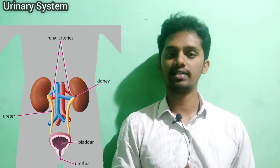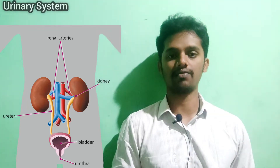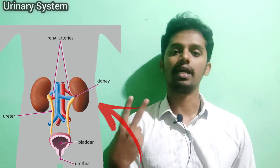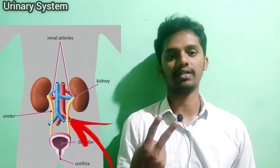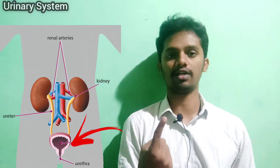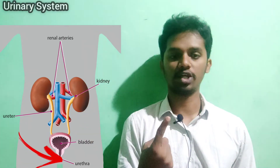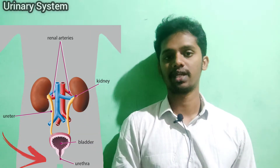The urinary system consists of two kidneys, then two ureters, one urinary bladder, and one urethra.